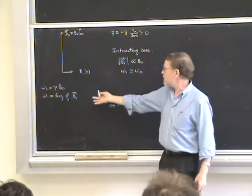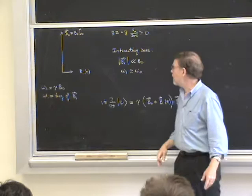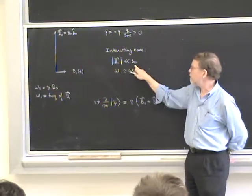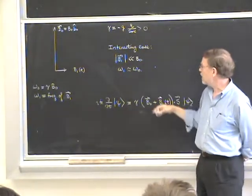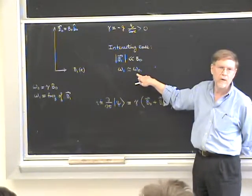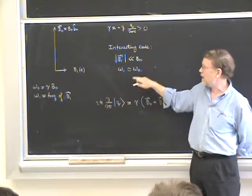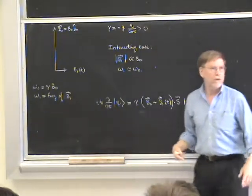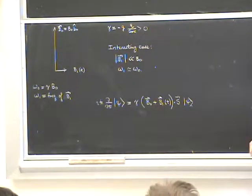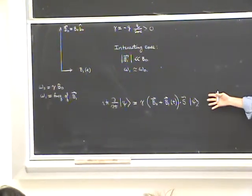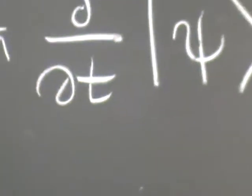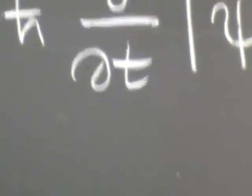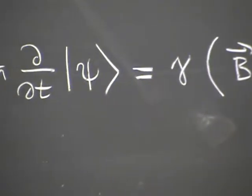We're going to solve this system in full generality for a certain time dependence of B1. The interesting experimental case is when the magnitude of B1 is much smaller than B0, so it acts as a small perturbation, and moreover, the frequency of the perturbation is comparable to the precession frequency in the background field. This is a resonance condition where, even though the perturbation is small, its effects build up over time to produce large effects, in particular inducing spin flips. It turns out this particular time dependence allows an exact solution.